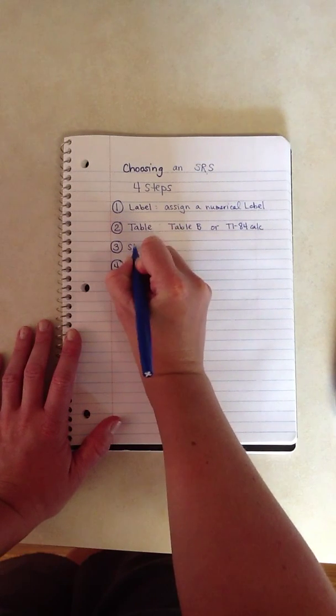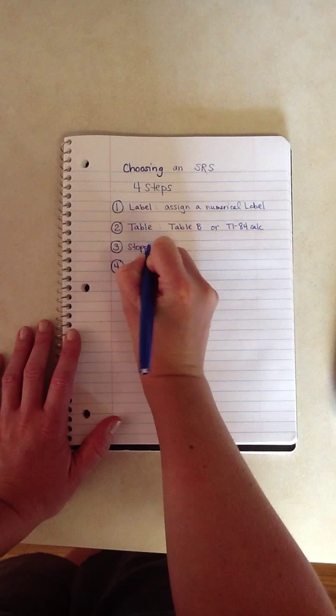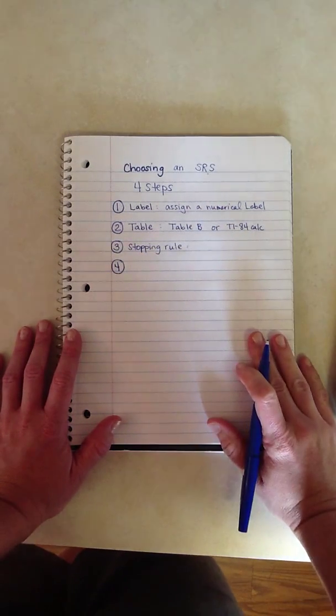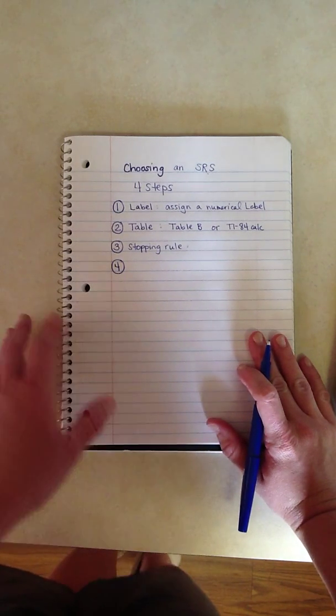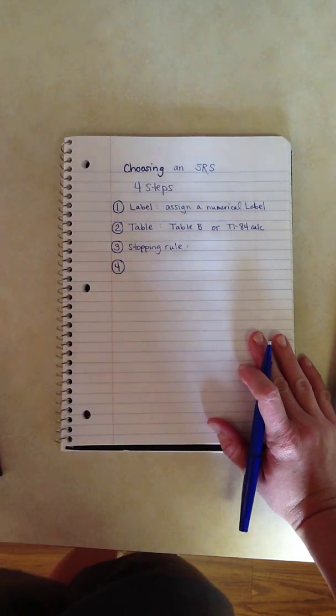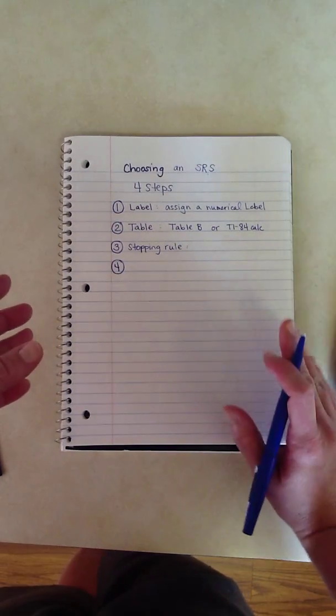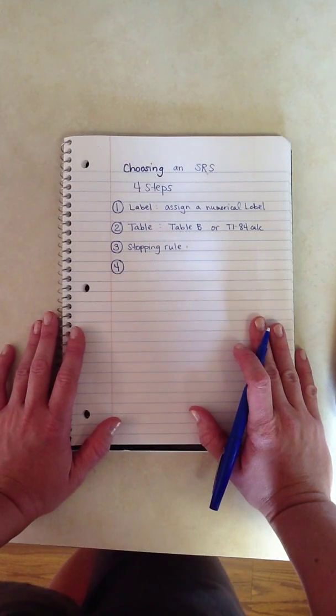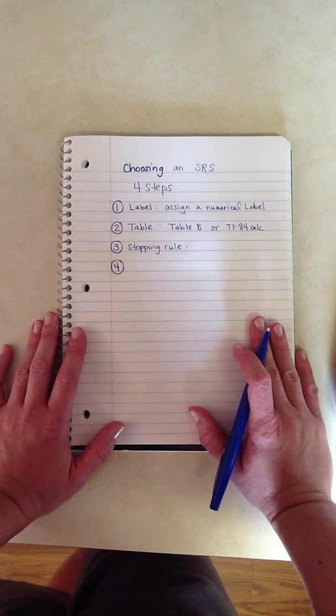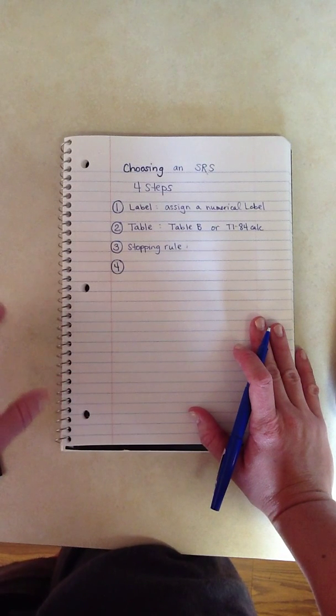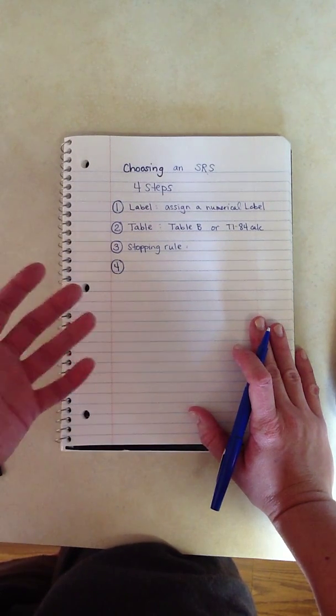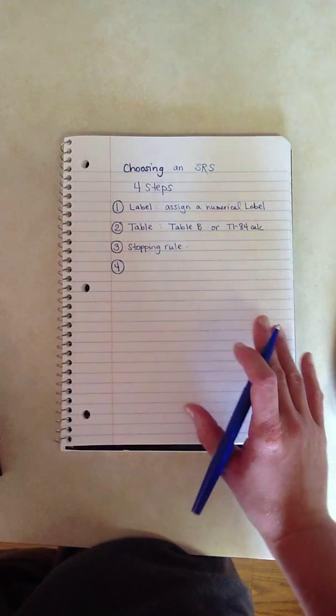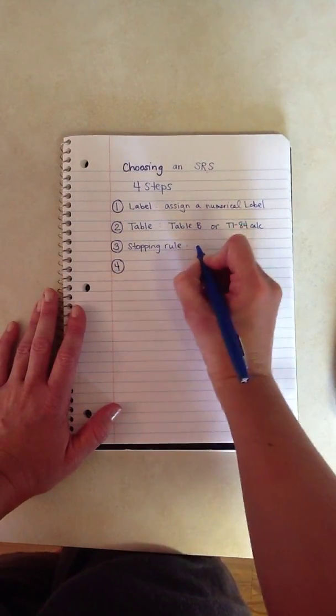The third step would be what I call a stopping rule. Now, this is important because if you're going to pick simple random numbers, how long do you do this for? Do I just keep doing this for infinity? How many specifically do I need? Maybe if I have a class of a hundred students, I'm probably not going to pick all hundred of them to win a prize. I'll probably pick three or four. It depends on how many you want. So I would indicate when you want to stop.